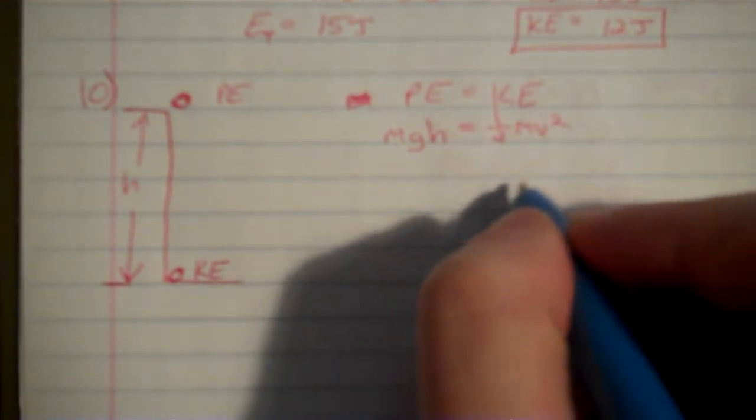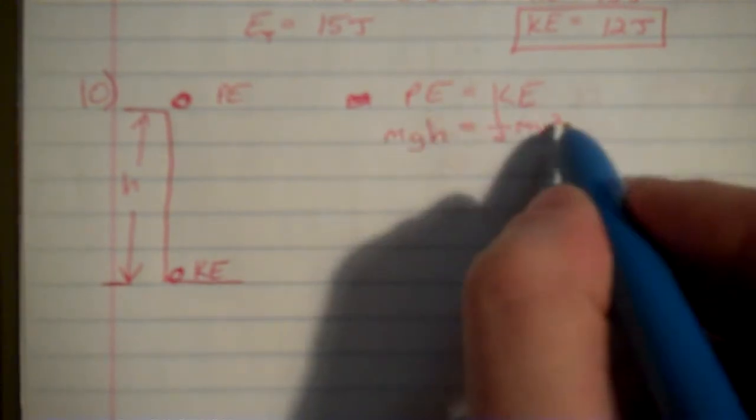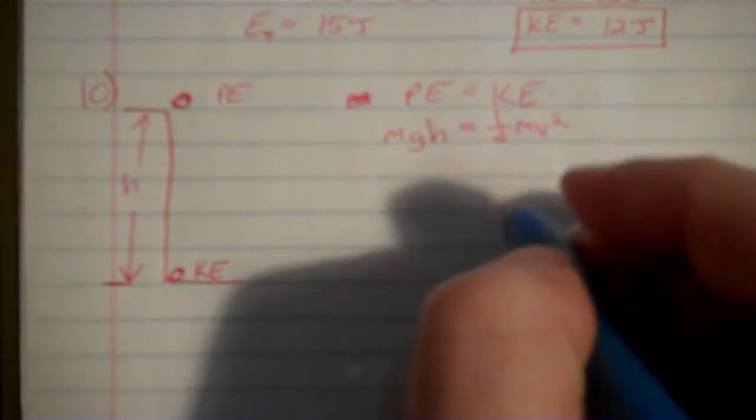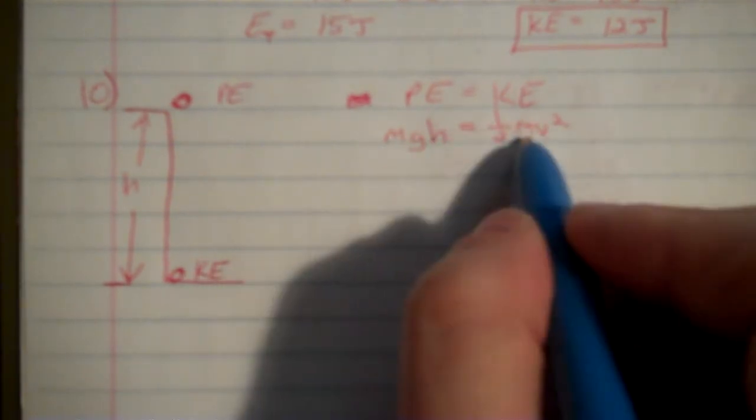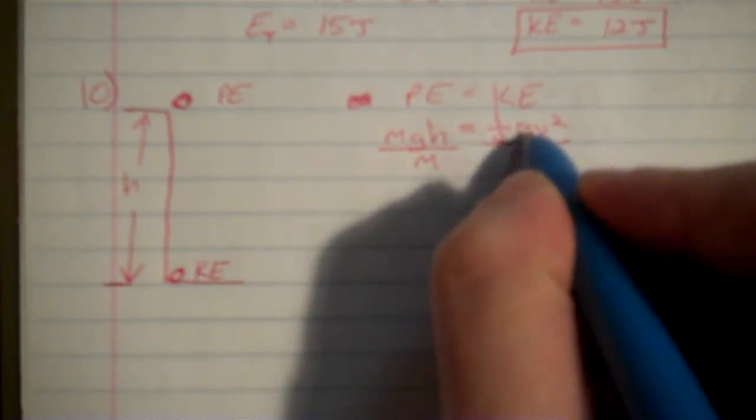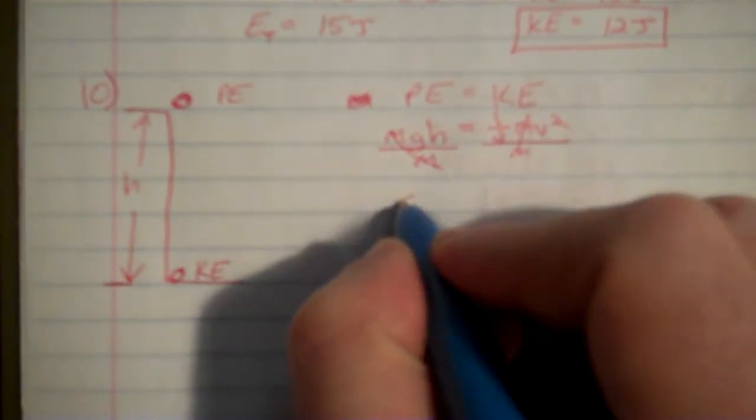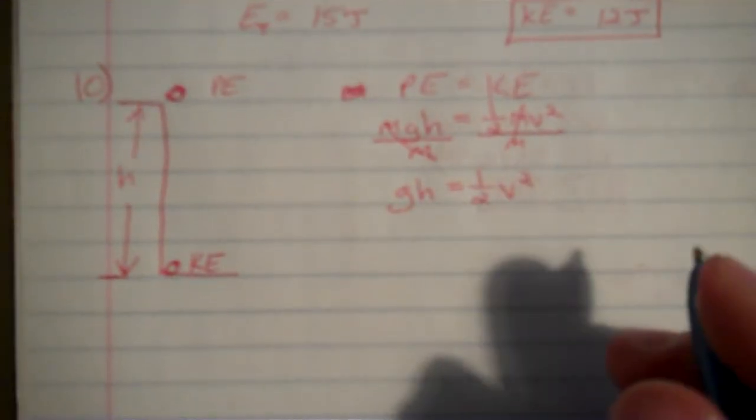And it says it wants an equation for v, for velocity. So basically, I have to solve this equation for velocity, to isolate velocity. Well, I'm going to start with, I have mass on both sides. So I'm first going to get rid of that. Divide by the mass, cancels out here, cancels out here. I'm left with gh equal to 1/2 v squared.